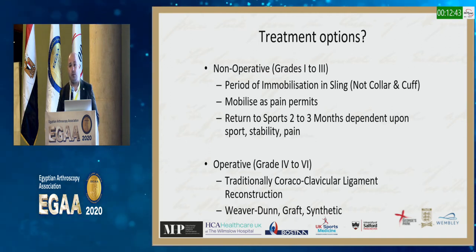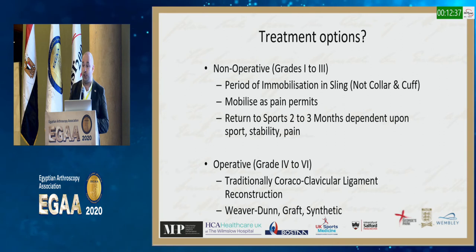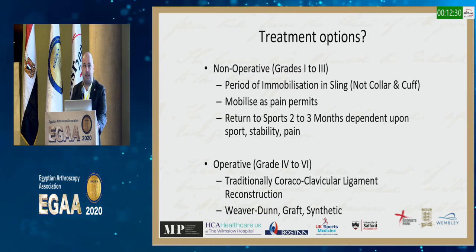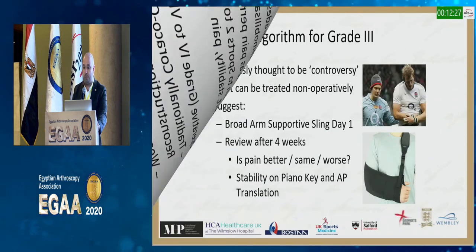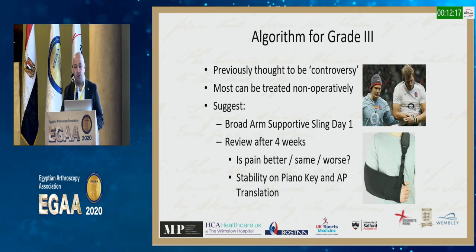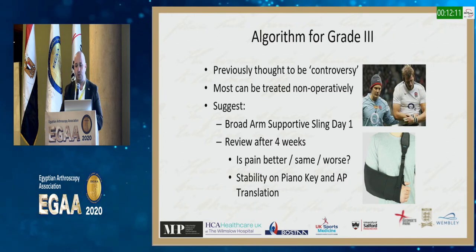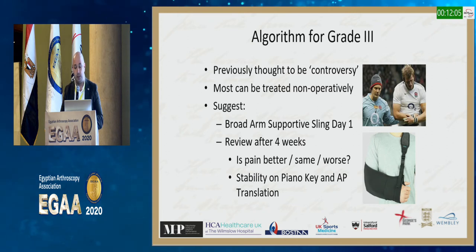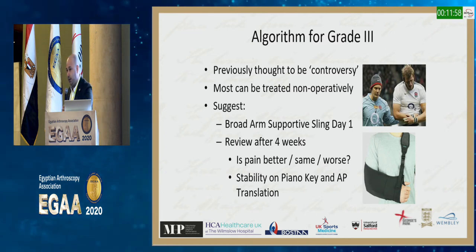Operative treatment traditionally involves some form of coracoclavicular ligament reconstruction using a graft or synthetic ligament. The so-called controversy around grade three AC injuries: the vast majority get better without surgery. Most can be treated non-operatively, particularly in non-sporting groups. In our NHS system, patients get immobilization in the emergency department and come to fracture clinic in the first one to two weeks.